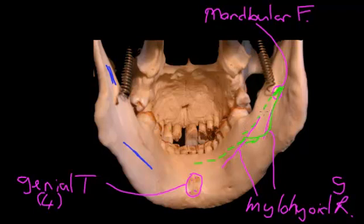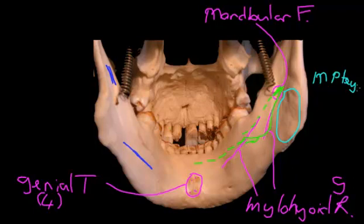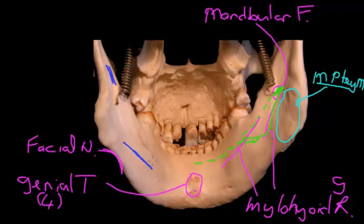So that's the mandibular foramen. You might also notice that this area of the mandible here is quite rough-looking, and that's because that is where the medial pterygoid muscle attaches — that muscle drags on the bone and roughens the surface. Also clearly evident on this side is the indentation called the facial notch, which we also saw on the lateral side, and that's where the facial artery takes its journey across onto the face to supply most of the facial structures.